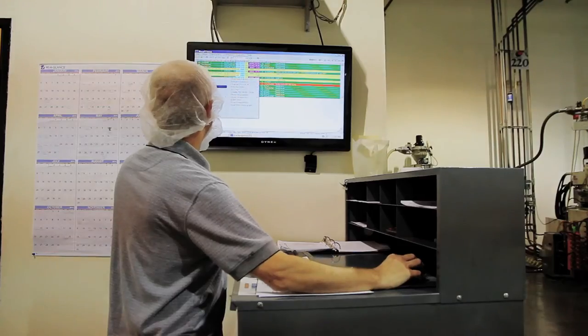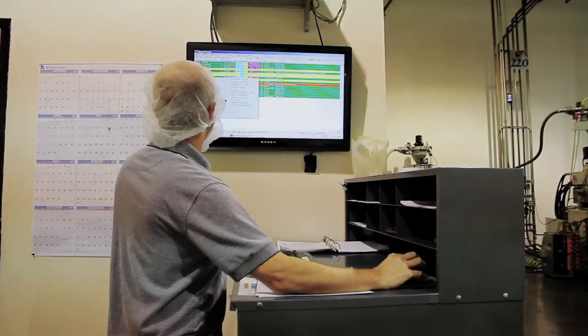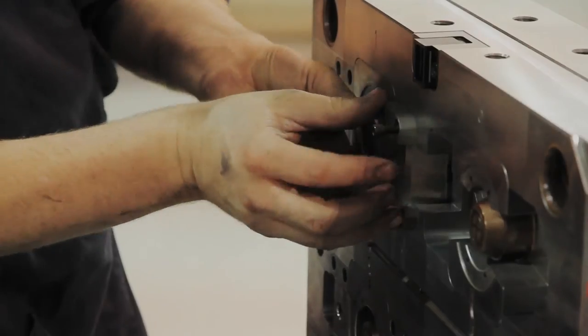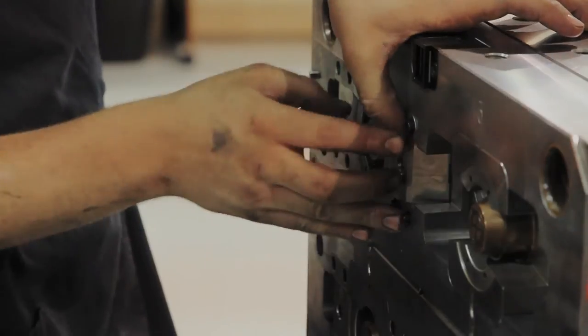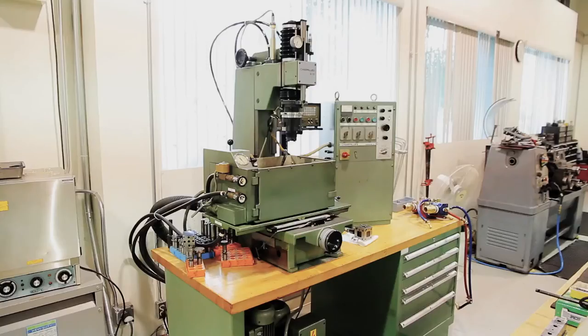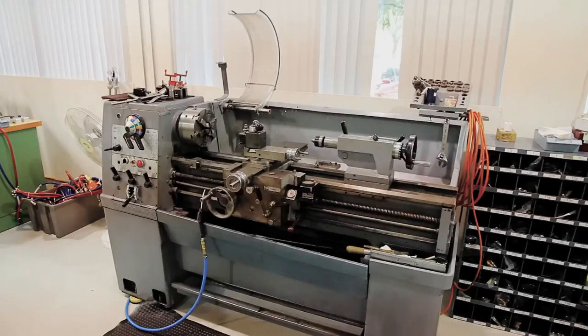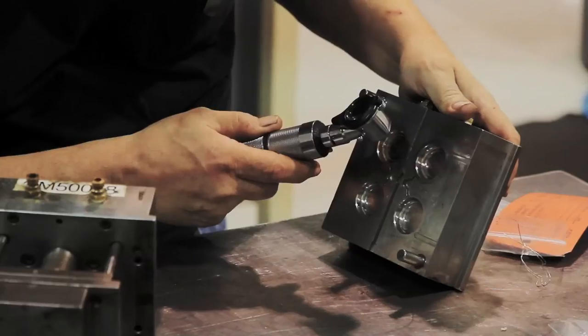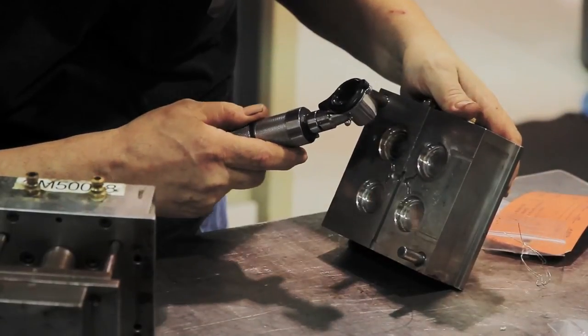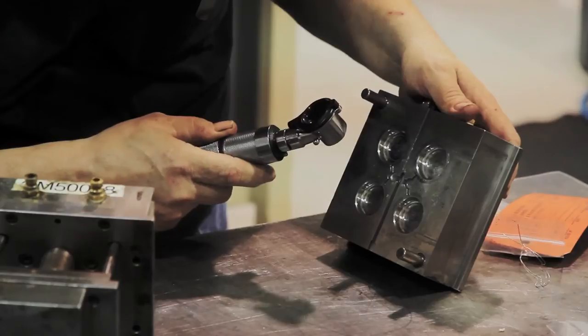Our in-house tool program includes inspections and cleanings after each run. Our equipment list includes EDMs, mills, lathes, and grinders, equipping us to handle most repairs in-house, getting your molds back in the press faster.